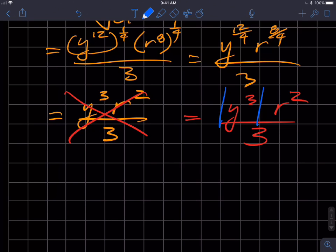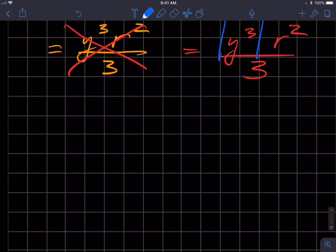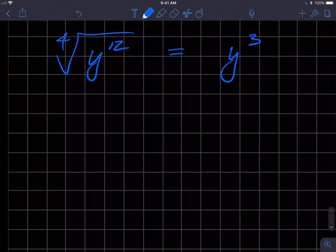This is my quickest way to explain to you. On this side I'm gonna have y cubed, and on this side I'm gonna have the original expression, the fourth root of y to the 12. We'll look at the r to the eighth after this because you can treat them separately.